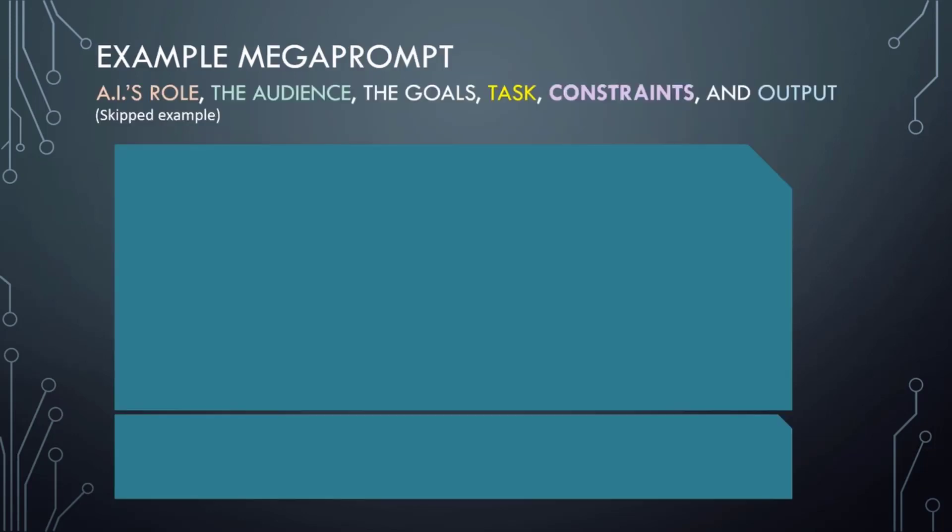Here is an example mega prompt. It contains all of the above parts except I did not provide an example or non-example, since it is simply revising paragraphs of text. By providing the AI with its role, the audience, the goals, tasks, constraints, and output, I'm likely to get a fairly in-depth response.